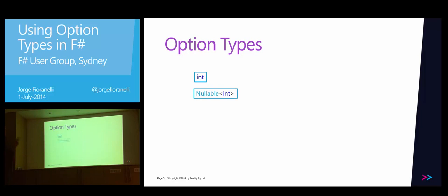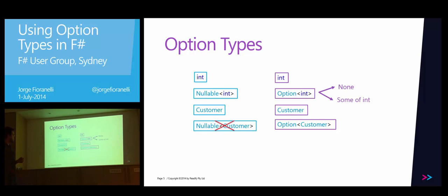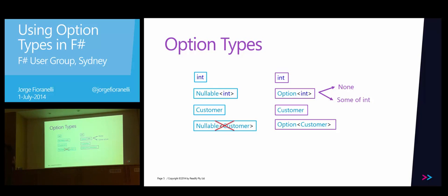In C#, we have integers, nullable integers, and reference types like customer — but we don't have a nullable customer. The same customer type is used for both when you have a value and when you don't. In F#, you have integer, you have option (similar to nullable), you have customer as a reference type, and you have an option of customer. So whenever you return a customer, it's always going to be a customer and never an empty one. Whenever you use an option, you get two different types — think of option of int as abstract, with implementations that could be none or some of int.